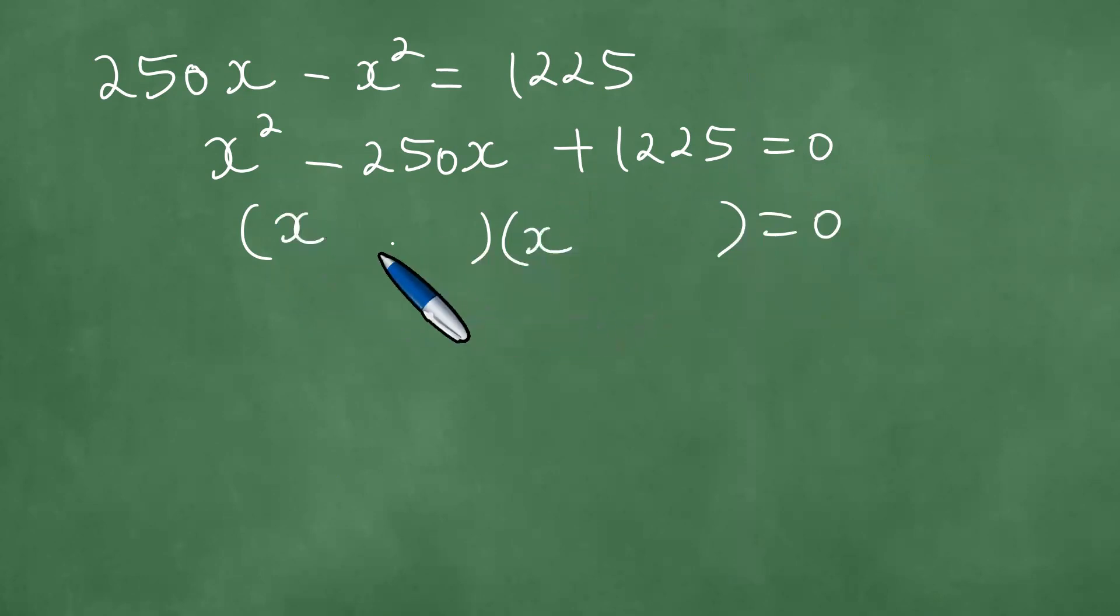So we have here minus 5 and minus 245. And this is x equals 5 or x equals 245. And that is what we get.